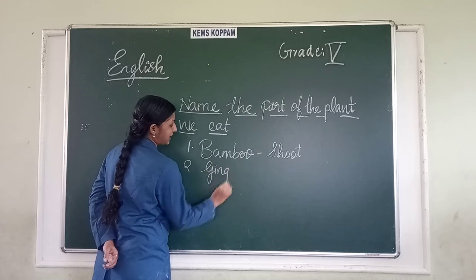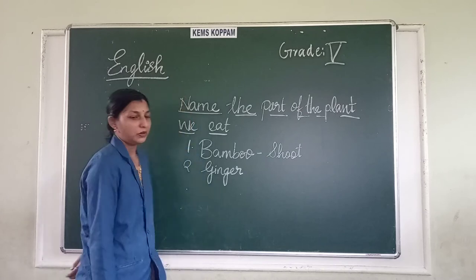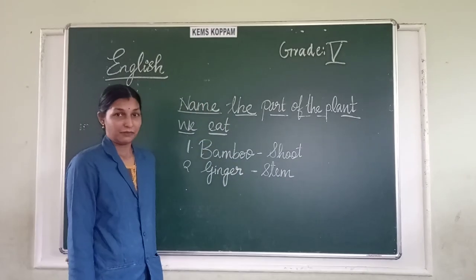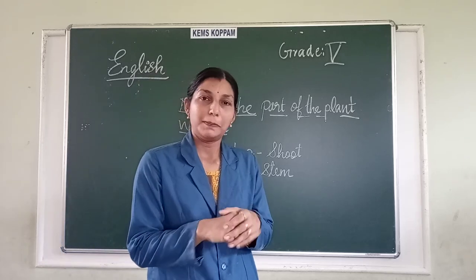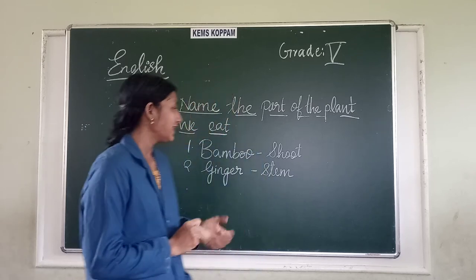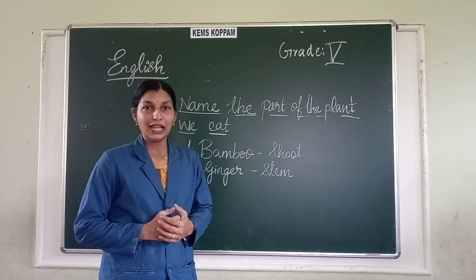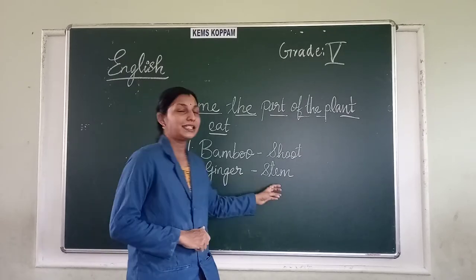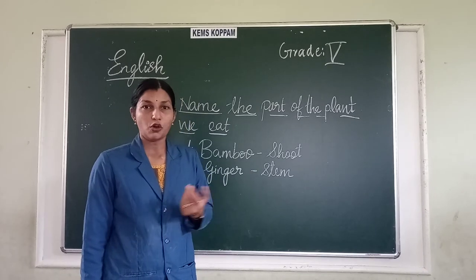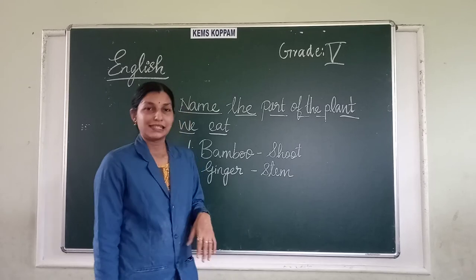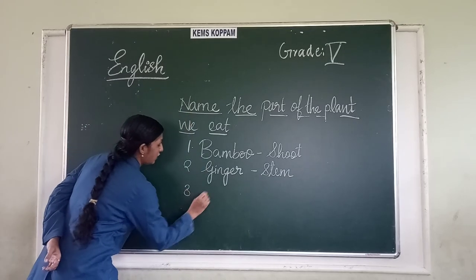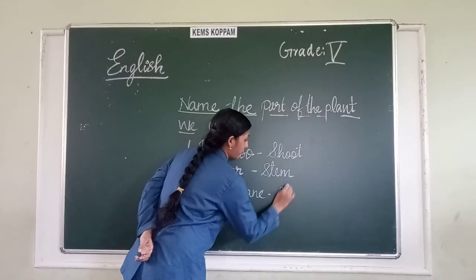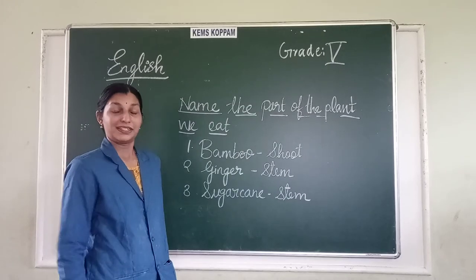Second: ginger — we use ginger in most of our curries. The part of ginger we eat is the stem. What you see underground is like a bulb, but actually it is an extension of the stem — that's why we call it the stem, not the root or bulb. It is the outgrowth or part of the stem. Third: sugar cane — what do we eat? We eat the stem. The stem is that part of the sugar cane you can see and eat.